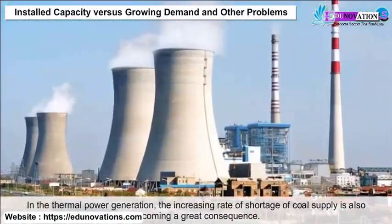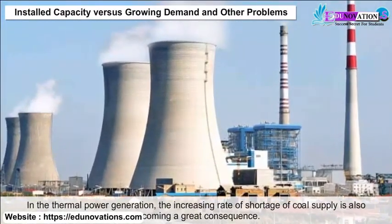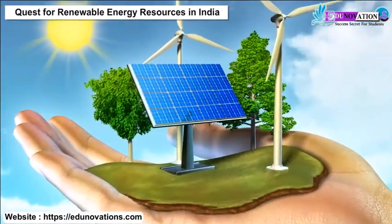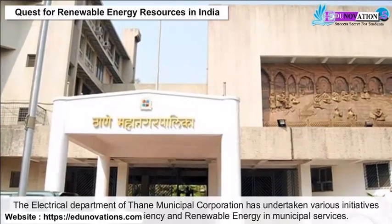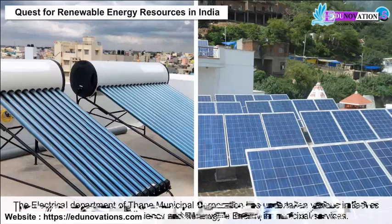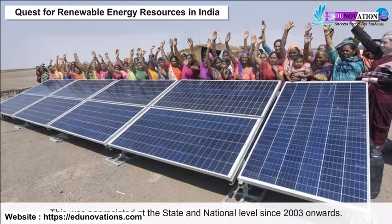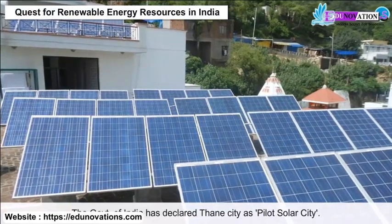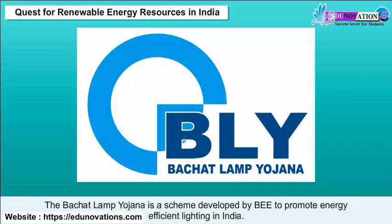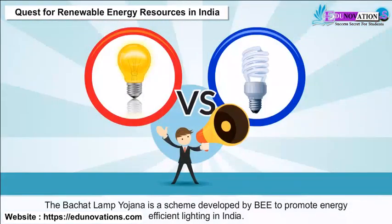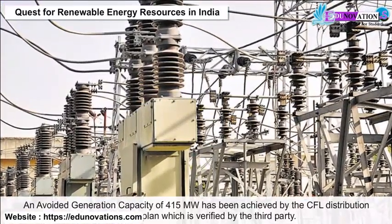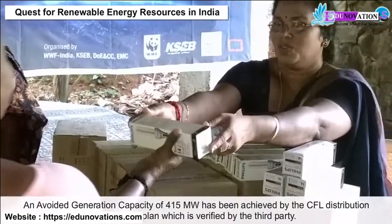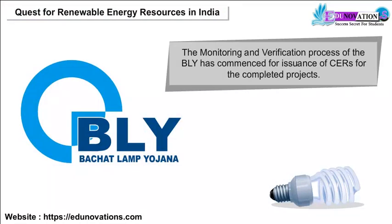In thermal power generation, the increasing rate of shortage of coal supply is also becoming a great concern. Quest for Renewable Energy Resources in India: The Electrical Department of Thane Municipal Corporation has undertaken various initiatives in promoting energy efficiency and renewable energy in municipal services. This was appreciated at the state and national level since 2003 onwards. The government of India declared Thane City as a pilot solar city. The Bachat Lamp Yojana (BLY) is a scheme to promote energy-efficient lighting in India. An avoided generation capacity of 415 megawatt has been achieved by CFL distribution during the 11th plan.